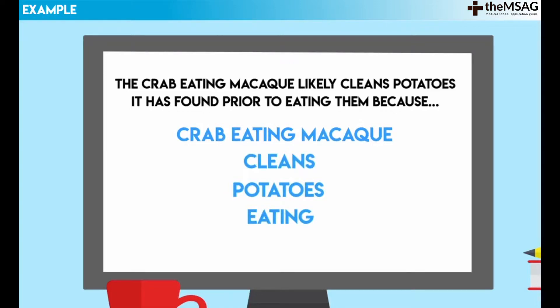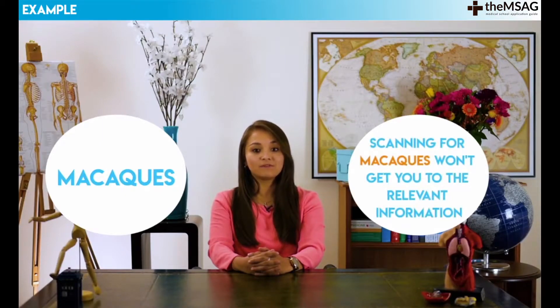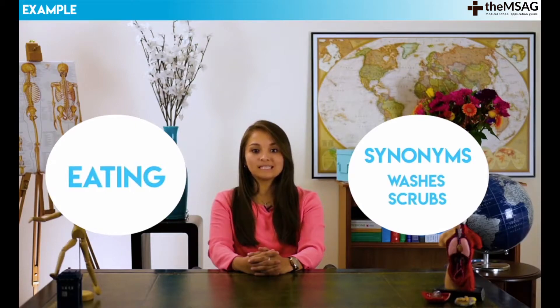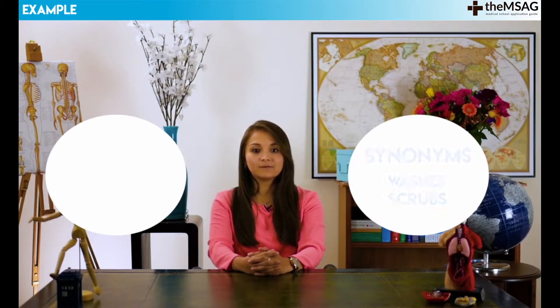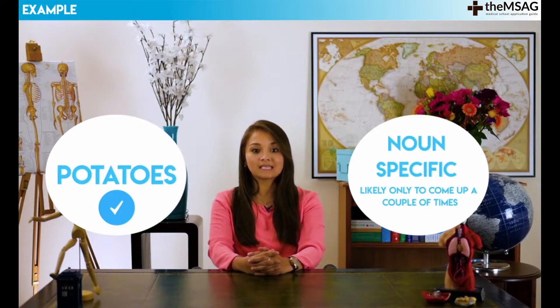Before I tell you, I'd like you to choose which one you think you should scan for. As the article is on macaques, there will likely be several mentions of that word in the text, so scanning for macaques won't get you to the relevant information quickly enough. The word 'cleans' is a verb, and the problem with scanning for a verb is that the text could have used synonyms such as 'washes' or 'scrubs' instead. The same applies to the word 'eating.' The best word to scan for in this example would be 'potatoes' — it's a noun, it's specific, and it's likely to come up only a couple of times, allowing you to locate the relevant text very quickly.